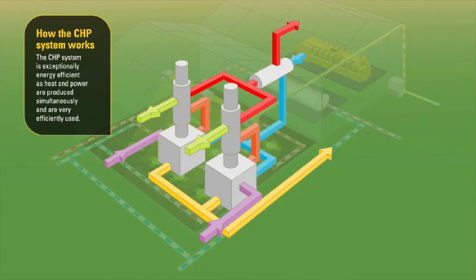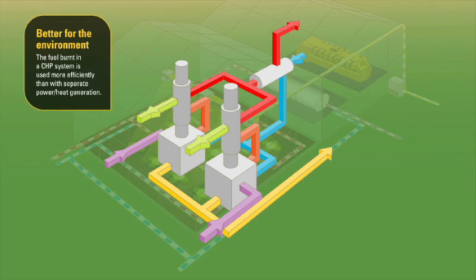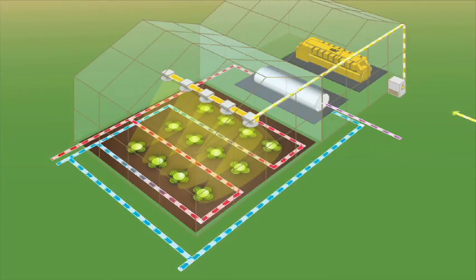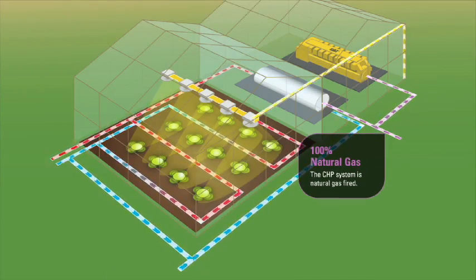The CHP system is exceptionally energy-efficient as heat and power are produced simultaneously. The fuel burnt in a CHP system is used more efficiently than in separate power and heat generation processes. Just as with a boiler, the CHP system is natural gas fired.